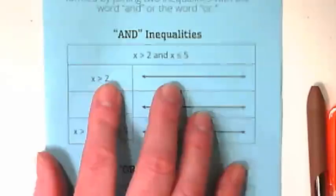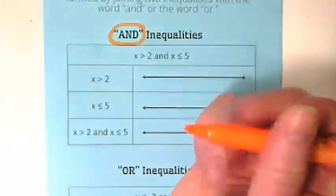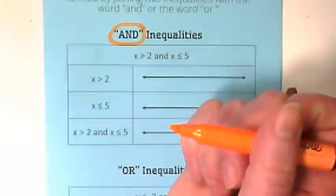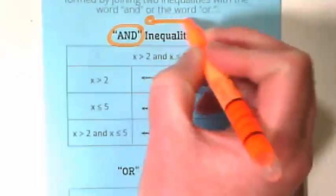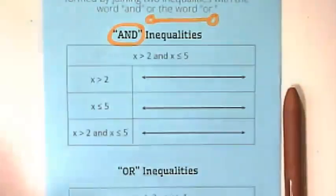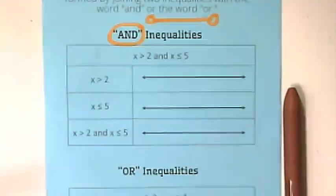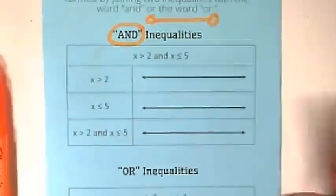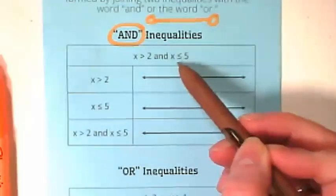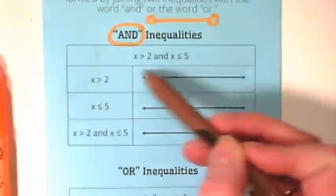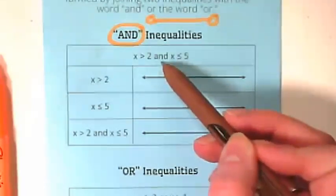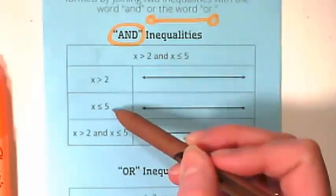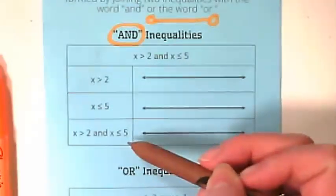So we're going to start off looking at 'and' inequalities. Also use our highlighters to do some note taking here. 'And' inequalities are ones where there is a line stopped by two points on a number line, and everything that's on that line in between those two points is true. So what we're going to do here is we're going to look at x is greater than 2 and x is less than or equal to 5. Those two inequalities are going to be combined by the word 'and'. We're going to graph the first one and then the second one and then we're going to graph them as a compound inequality together.